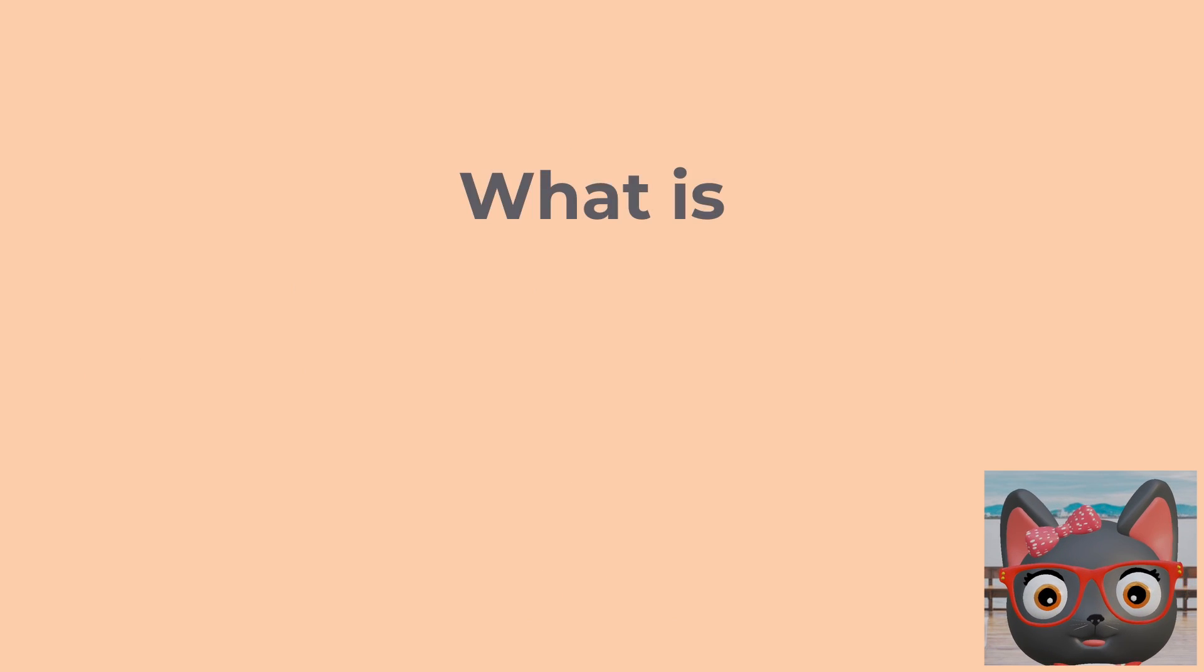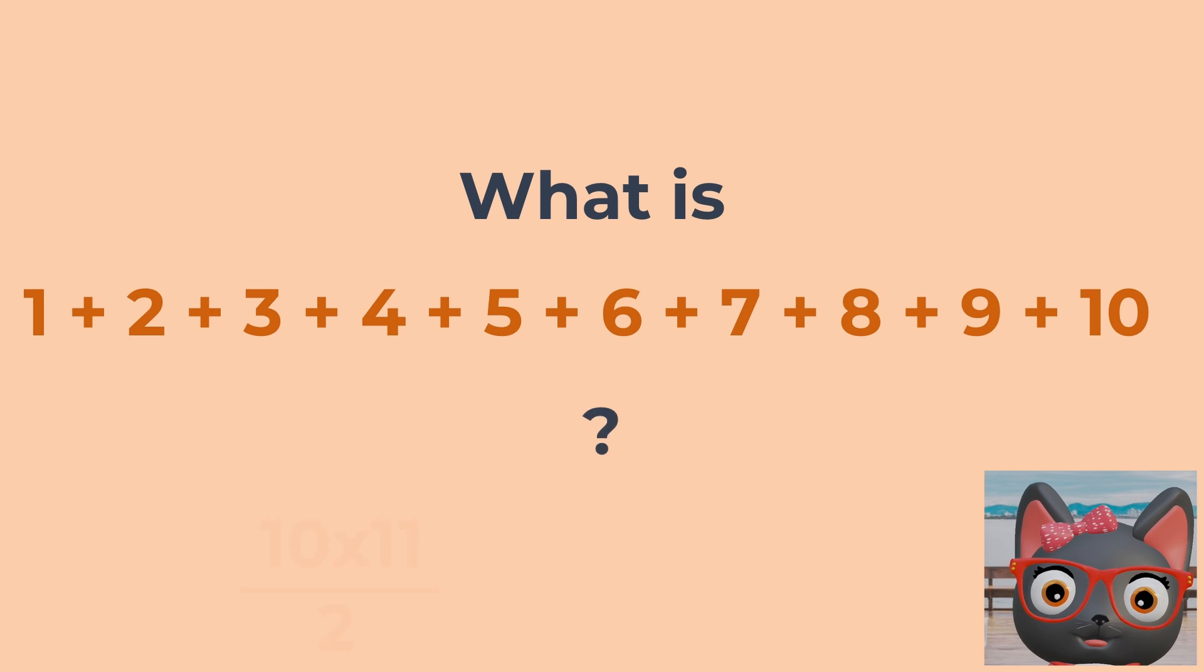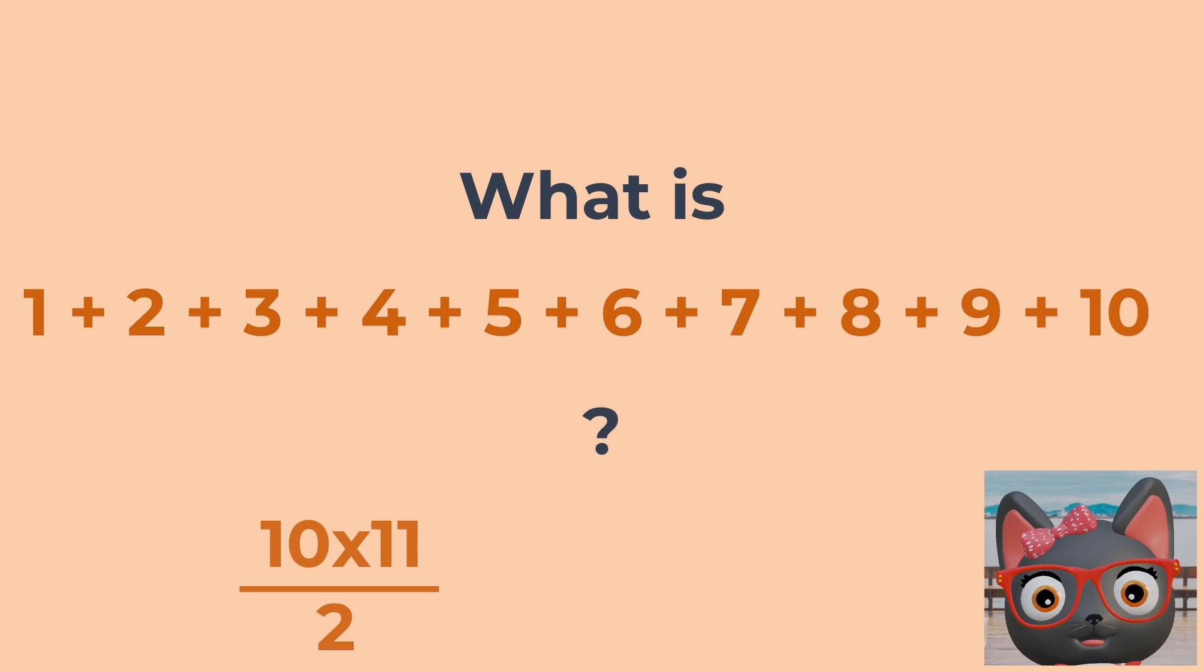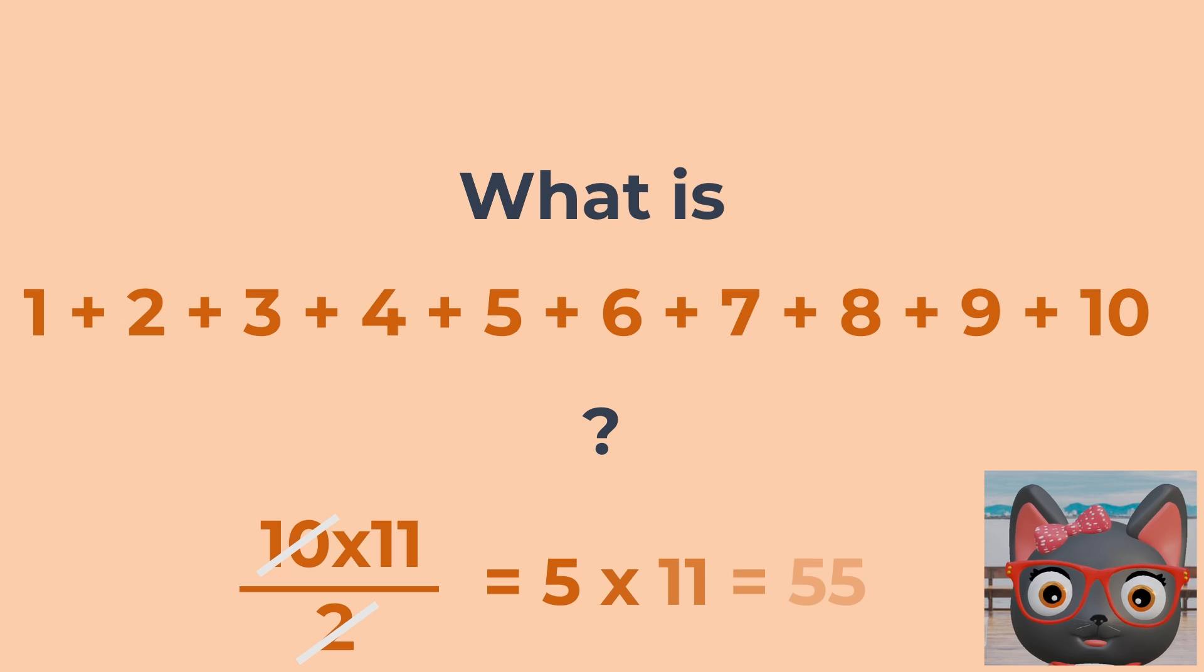So now, what's 1 plus 2 plus 3 plus 4 plus 5 plus 6 plus 7 plus 8 plus 9 plus 10? Now, we aren't summing it up twice, so 10 times 11 divided by 2. Cross out the 10 and 2, and we get 5 times 11, which is 55.